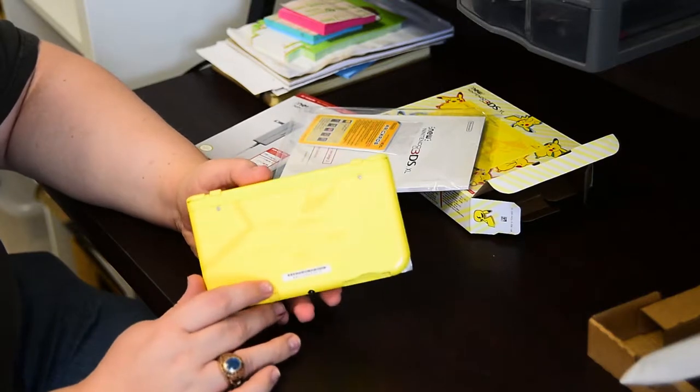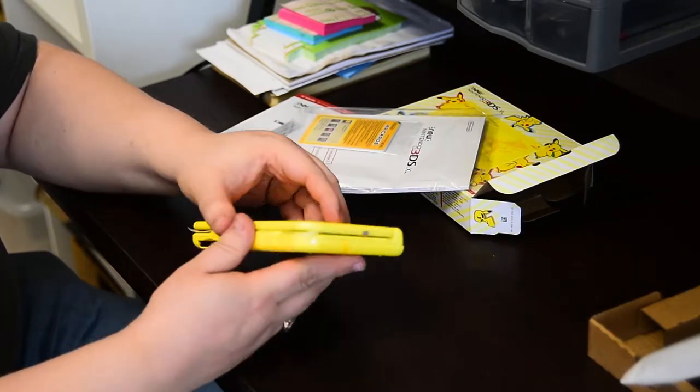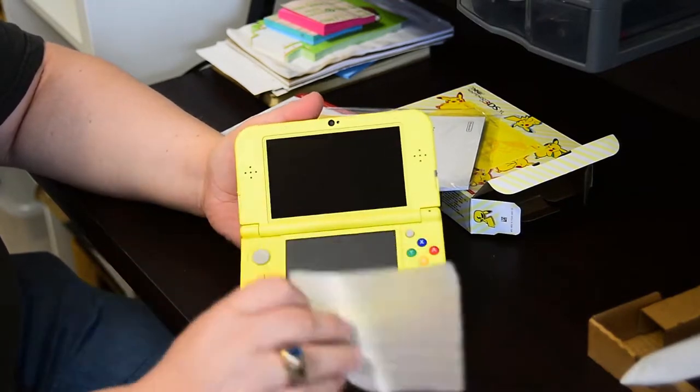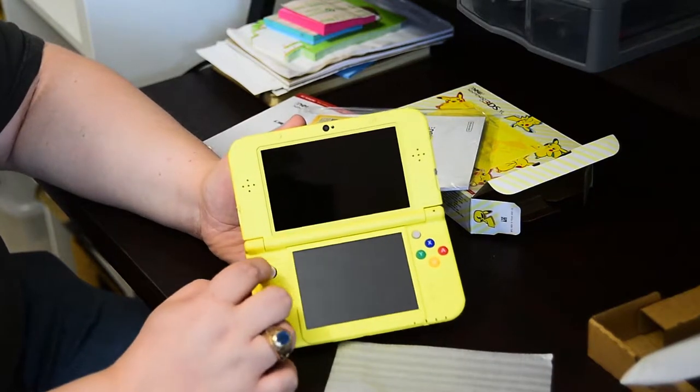So all your standard Nintendo features. Your standard 3DS features. You're going to be able to use the amiibos because it's the 3DS XL. I like the choice of color buttons. You've got the different color buttons than on most.